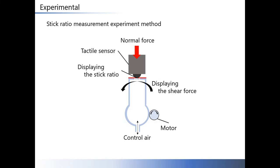This slide shows method of stick ratio display experiment. In this experiment, one tactile sensor and a tactile display device are used. Apply a certain normal force to the tactile sensor and press it against the display surface. Air is jetted or sucked from the display surface. At the same time, shear force is applied from the tactile display device, and the stick ratio at that time is measured.